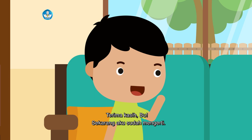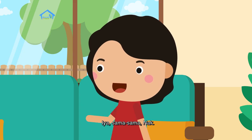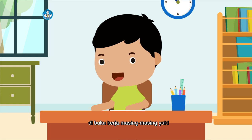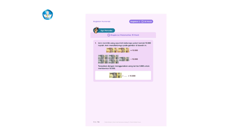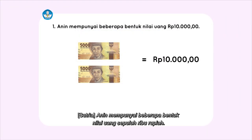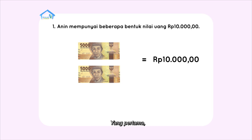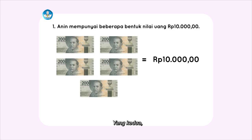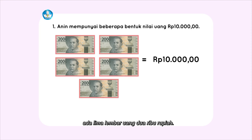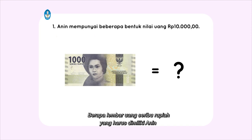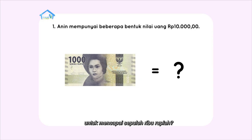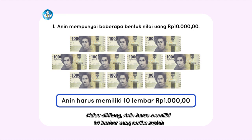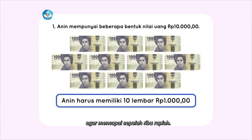Terima kasih, bu. Sekarang aku sudah mengerti. Iya, sama-sama, nak. Teman-teman, sekarang kita mengerjakan soal latihan di buku kerja masing-masing yuk. Anin mempunyai beberapa bentuk nilai uang 10.000 rupiah. Yang pertama, ada 2 lembar uang 5.000 rupiah. Yang kedua, ada 5 lembar uang 2.000 rupiah. Berapa lembar uang 1.000 rupiah yang harus dimiliki Anin untuk mencapai 10.000 rupiah? Kalau dihitung, Anin harus memiliki 10 lembar uang 1.000 rupiah agar mencapai 10.000 rupiah.